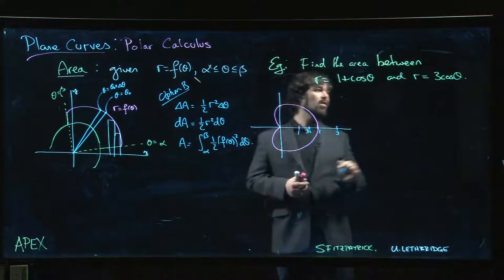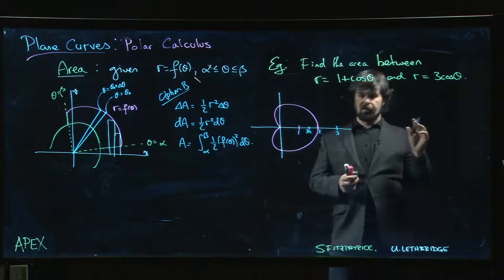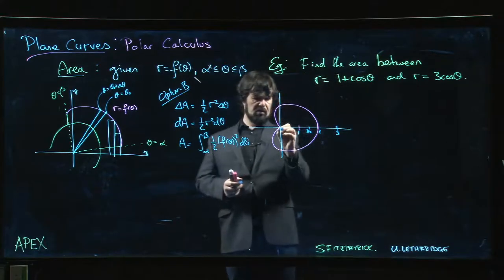So it's a circle of radius one point five, radius three over two centered at three over two. So it looks like this.